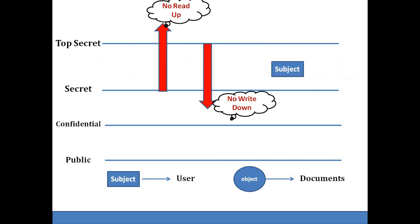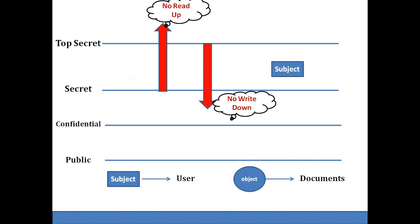Now let us see the basic principles of the Bell-LaPadula model and how it maintains confidentiality. In this diagram, four types of information are shown with their levels of priority. Here, subject means the user and object means the documents. In this example, a user is allowed to access secret documents, so their level is confined to secret documents. Hence this user can read and write all documents between top secret and secret. You can see the subject moving between those two lines. But this user cannot be allowed to read any document one step up — that is, top secret documents. This is the no read up rule. Similarly, this user cannot be allowed to write in one step below — that is, confidential documents. This is the no write down rule.